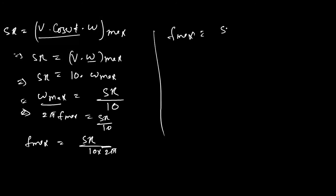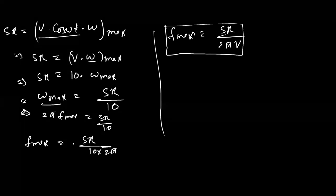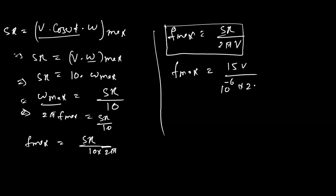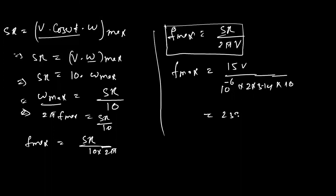The direct formula is: f_max = slew rate / (2π × V_peak). Substituting values: f_max = 15 V/µs / (2π × 10) = (15 × 10^6) / (2 × 3.14 × 10) ≈ 238.7 kHz. So the full power bandwidth is approximately 238.7 kHz. You may verify this answer.